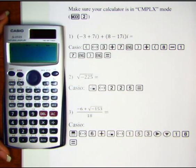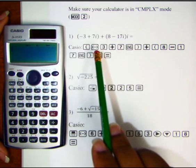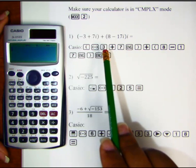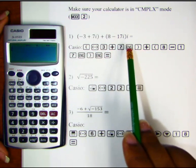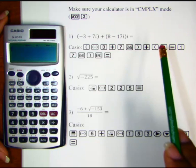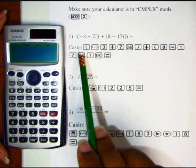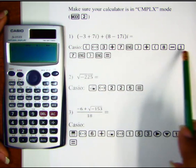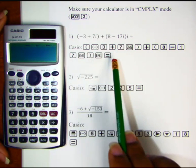Let's take a look at problem number one. We're going to add negative 3 plus 7i to 8 minus 17i times i. Keep in mind all the buttons I'll be selecting on the Casio are also listed here on the paper.